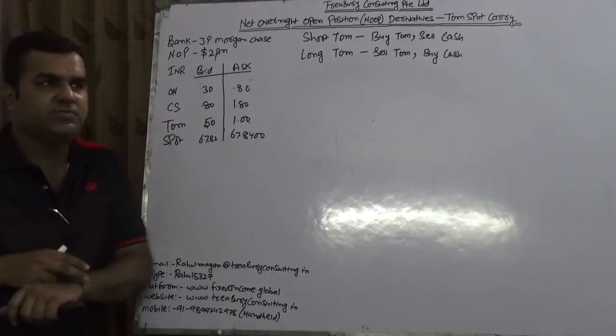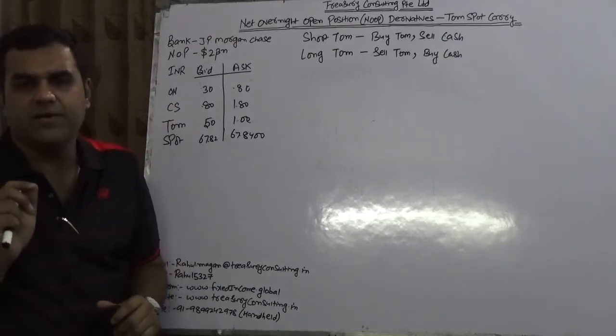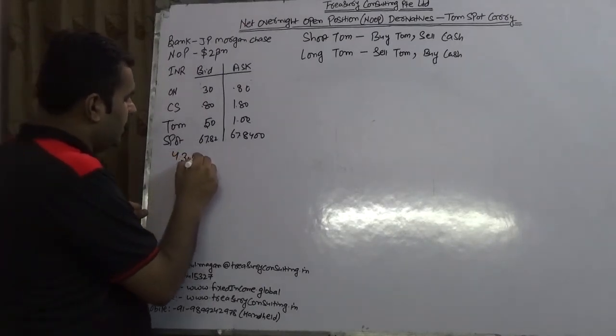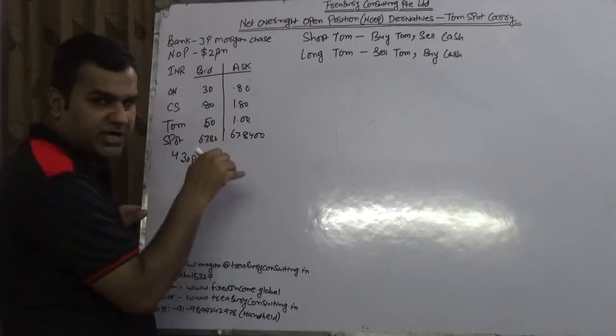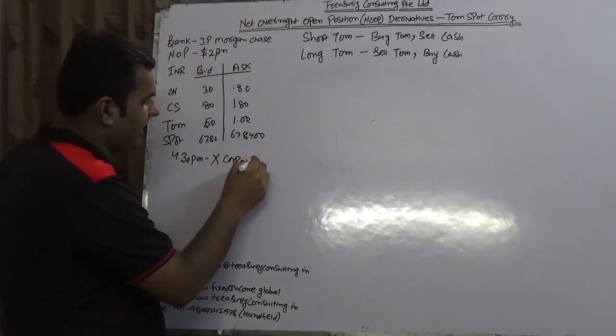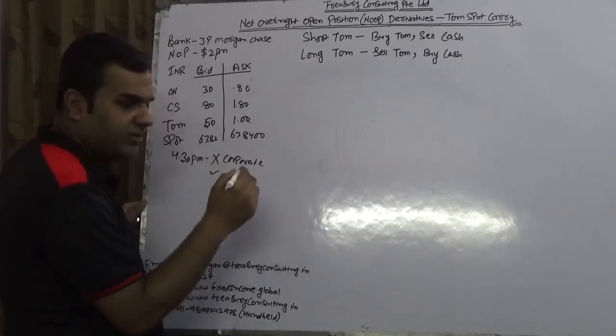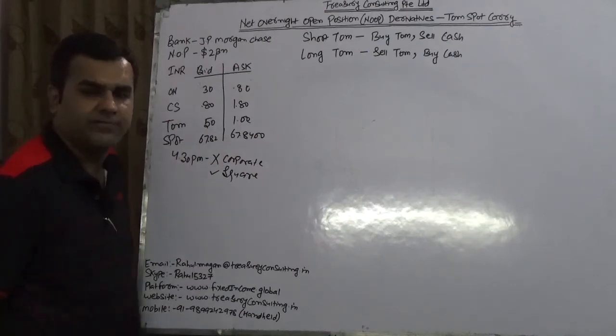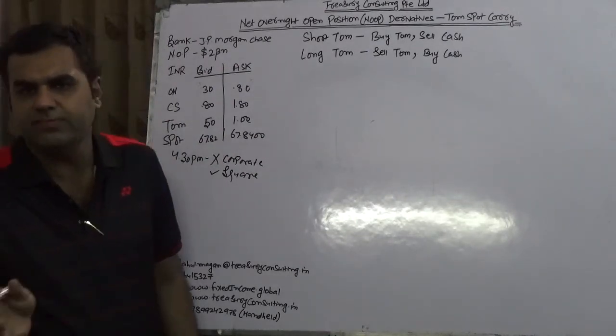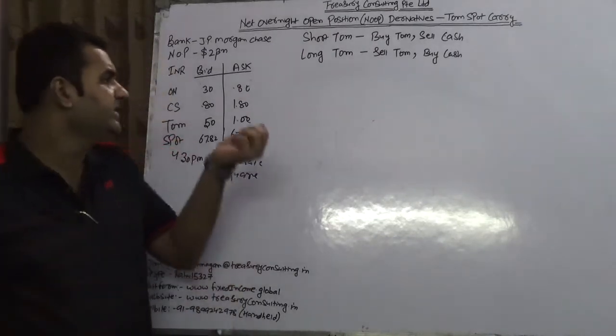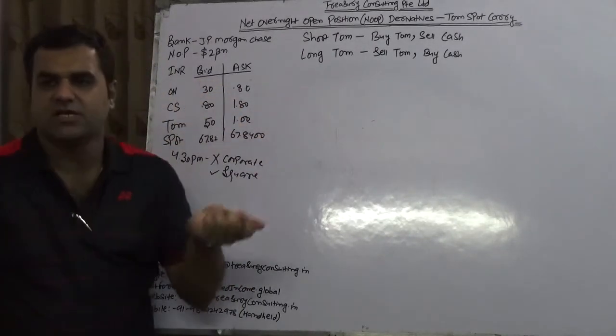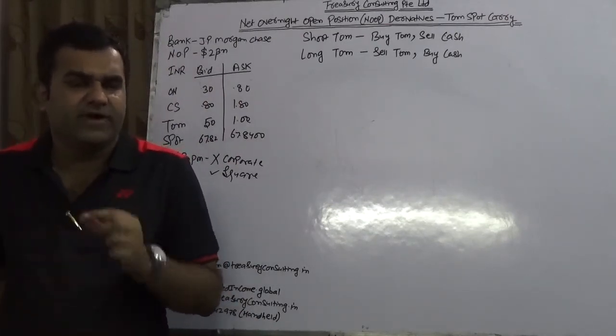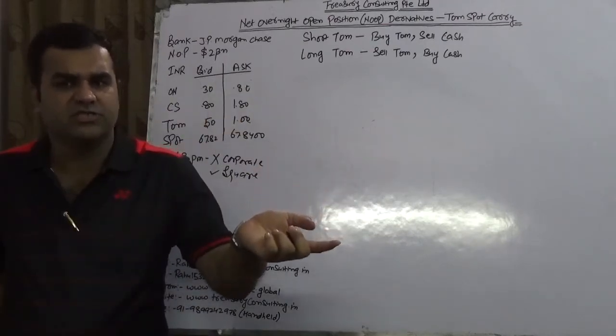We are shooting this video approximately 3:40 PM IST on 25th of May. At 4:30 PM IST markets will close for corporate and it would be open for banks for square. We do not use the word wind up, we will use the word square. Because in a day bank takes so many positions in so many currencies. Like JP Morgan Chase, they have taken so many positions in so many currencies so they need to wind it up. If they have not been able to wind it up they will pass it to the NDF desk.